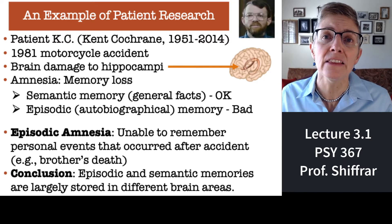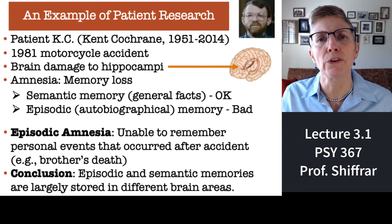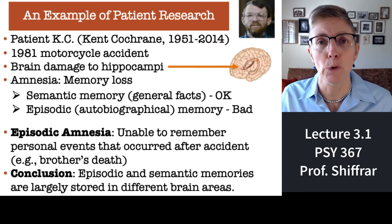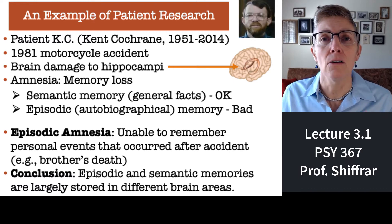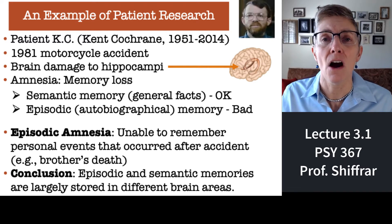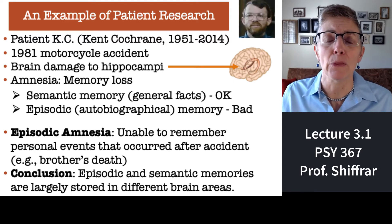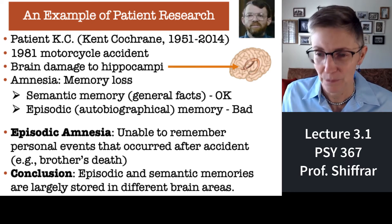A side note: in this class we will be talking about patients throughout the semester, and almost all the time I'll refer to patients by letters — for example, patient KC. That's done to protect the anonymity of the patient. Dr. Tulving and his colleagues were able to publish research on KC, who we now know was named Kent Cochran, without anybody knowing it was Kent Cochran. After a patient dies, we find out their name and more personal information, but many of us get used to referring to someone by their initials and continue doing that.